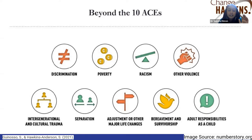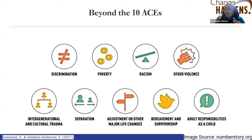Discrimination is one big expanded ACE — this could be gender discrimination, sexual orientation, or socioeconomic status. Living in poverty is a significant adverse childhood experience. Racism is a huge area currently being studied. I'm personally collecting over 500–600 data points from students who have indicated they experience racism, but it often does not get acknowledged, so nobody sees it as an adversity. We're proposing we start considering youth who have experienced racism as facing a real adversity.